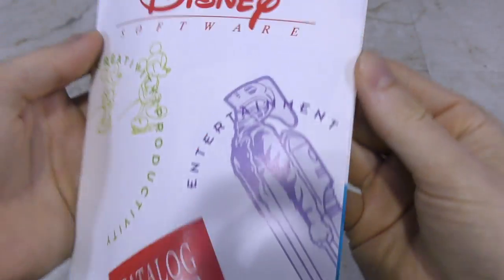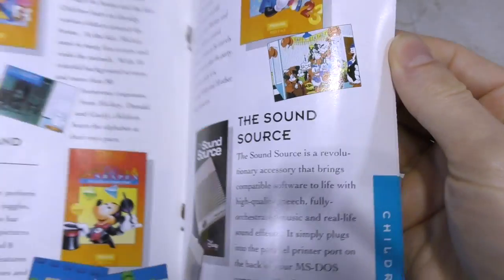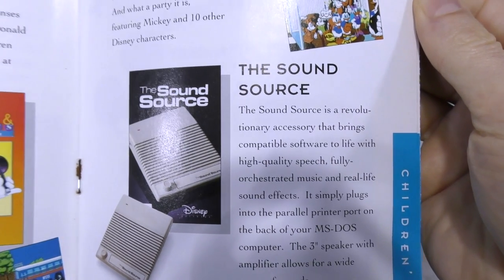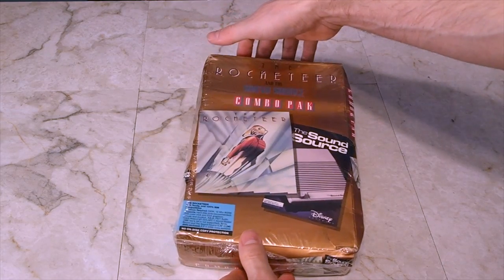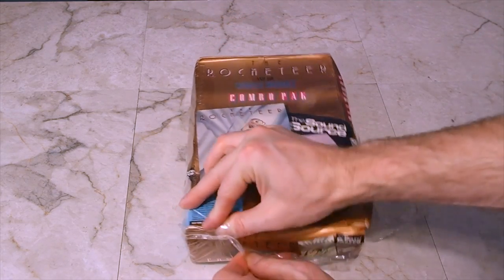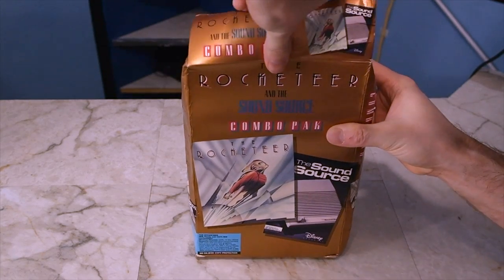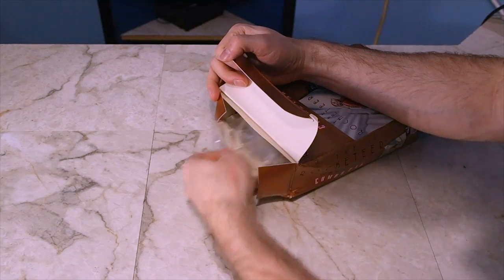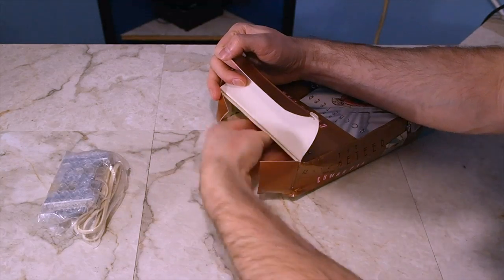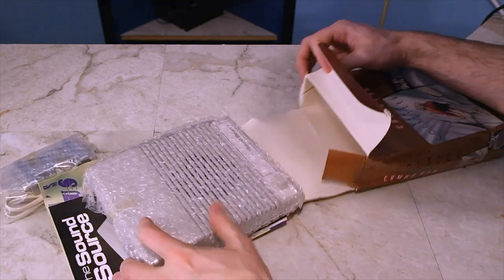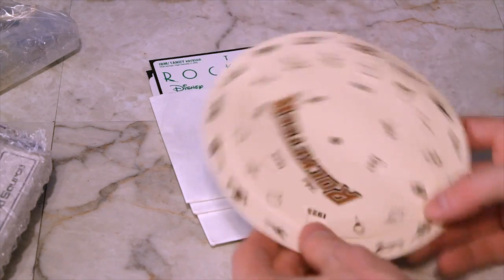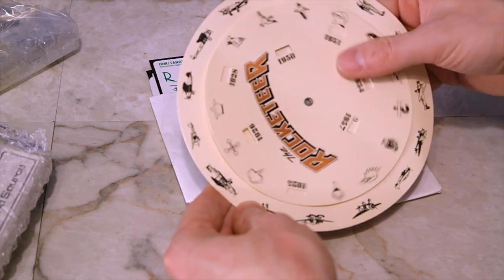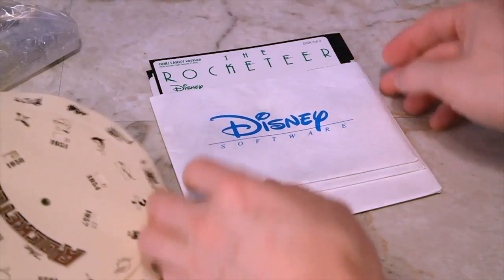In 1991, a competing device came onto the market known as the Disney Sound Source. This product works in a similar way, but sold for a very aggressive $14 and was even bundled with different games, such as the Rocketeer. So let's unbox this and see how it was all packaged. The box unfortunately has seen better days. Here's the parallel port connector, and here's the little speaker. The box almost looks empty, but they've hidden the floppy disks down in this little pocket here. It also comes with some little wheel — my guess is this is some sort of copy protection device where it asks you to find some information to start the game.